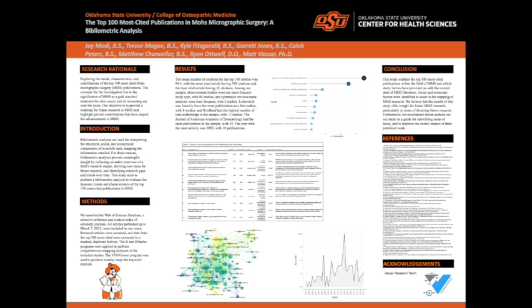For results, the mean number of citations for the top 100 articles was 84.4 citations, with the most cited article having 309 citations and the least cited article having 35 citations. Among our sample, observational studies were the most frequent study type with 86 different studies, while systematic reviews and meta-analyses were the least frequent with only two studies. Leibovich was found to have the most publications as a first author, publishing eight of the top 100 studies, and Broadlin had the highest number of total authorships in the sample with 12 different studies. The Journal of the American Academy of Dermatology had the most publications in the sample with 35, as seen on the right, and the year with the most activity was 2005 with 10 publications.